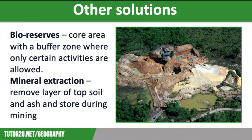The final local level strategy is reducing the damage from mineral extraction. Mining is extremely damaging to tropical rainforests. One way of reducing the damage is to remove a layer of topsoil and ash from burnt timber and store this while mineral extraction is taking place. Once the minerals have been removed, mining companies can then replace the earth and cover it with the stored topsoil and ash, which should be fertile. They can do this before replanting the land with native tree species as a form of restoration.